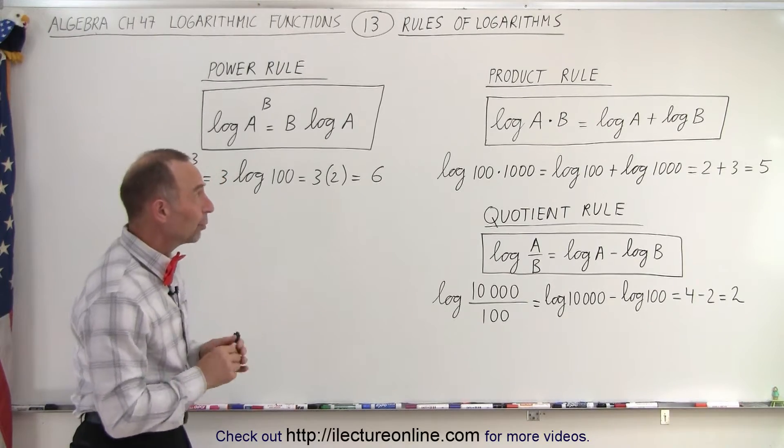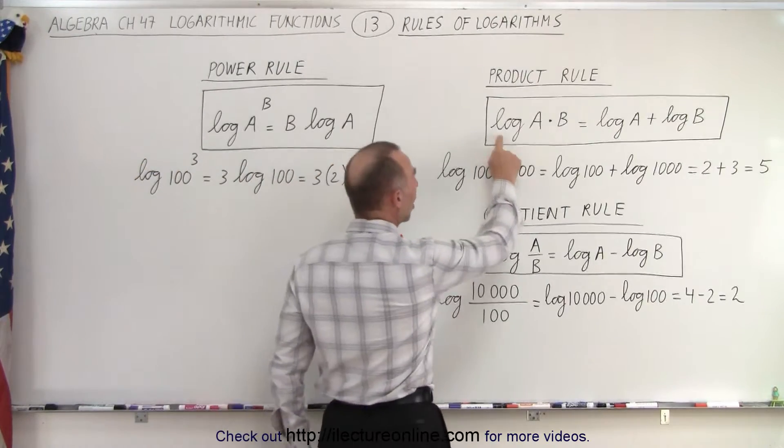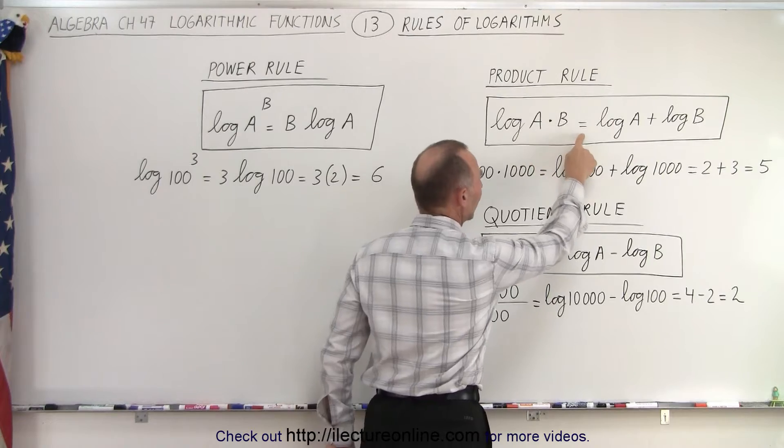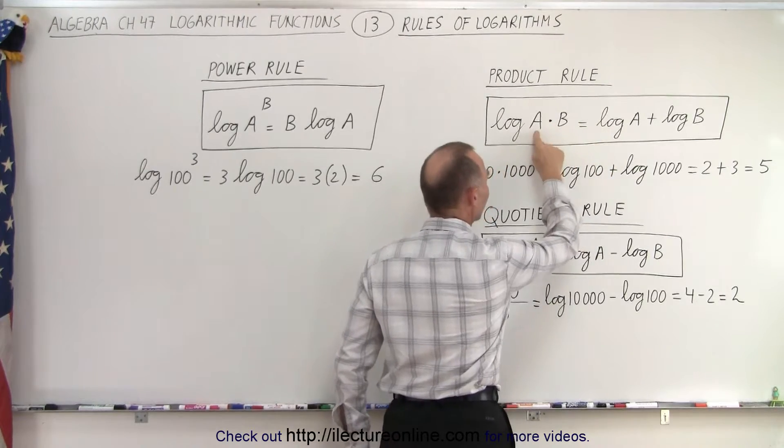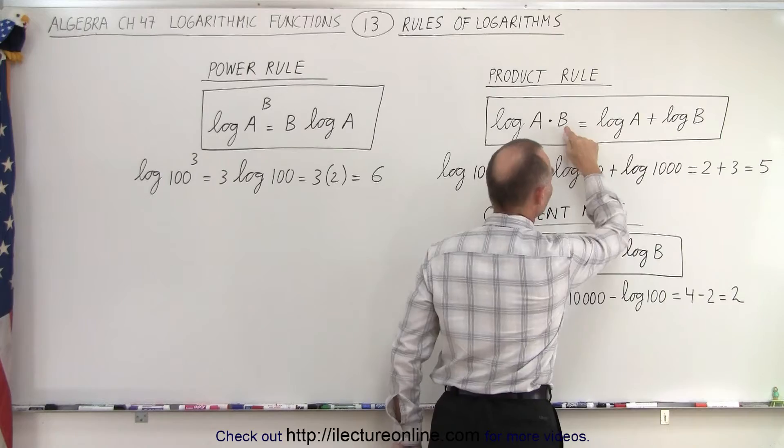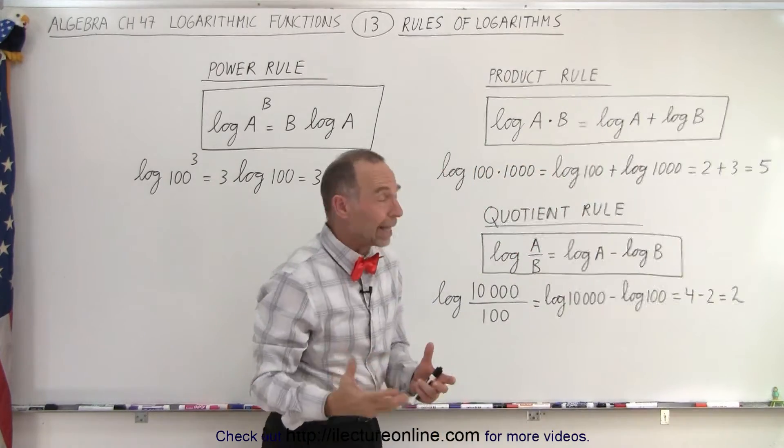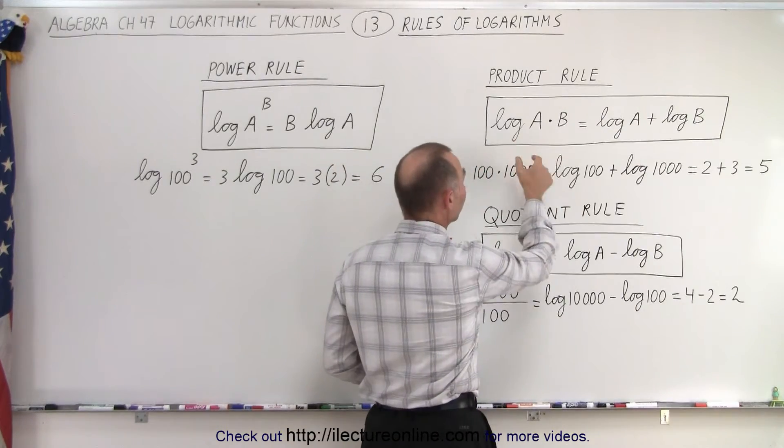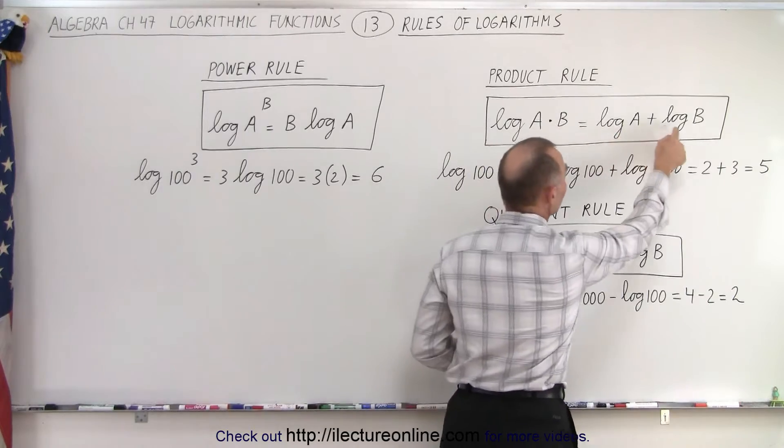The product rule says that if you take the log of a product, it is the same as the log of the first factor plus the log of the second factor. Another way of looking at it, taking the log of something converts a product onto a sum.